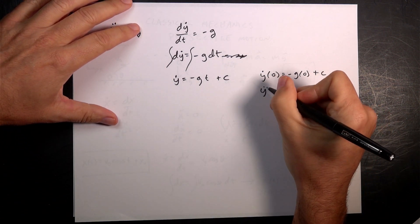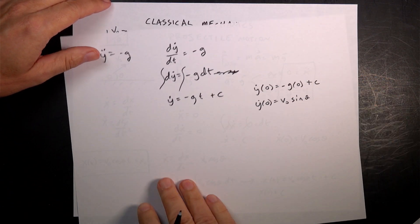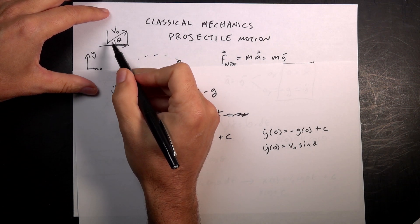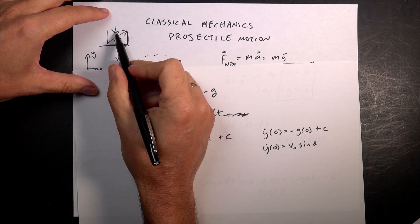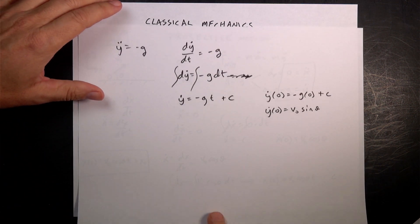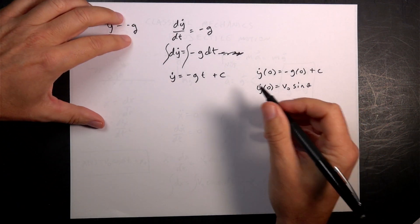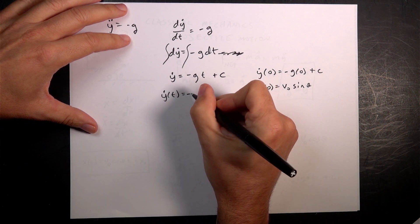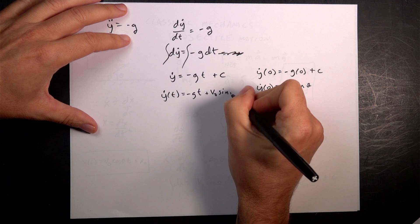y dot at t equals zero is going to be v zero sine theta. Why? Because if I have v zero as my initial velocity, this is the opposite side — sine is opposite over hypotenuse — so the y component is v zero sine theta. So now I have y dot as a function of time: y dot equals negative g t plus v zero sine theta.